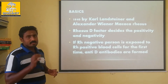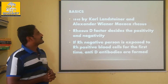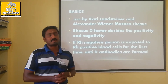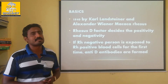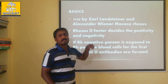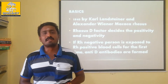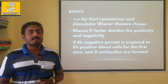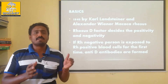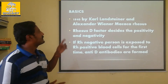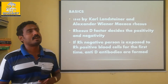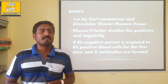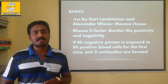In the 1940s, Karl Landsteiner and Alexander Wiener studied Macaca rhesus monkeys. Landsteiner discovered the ABO blood group system. Alexander Wiener is associated with the positive and negative RH factor.